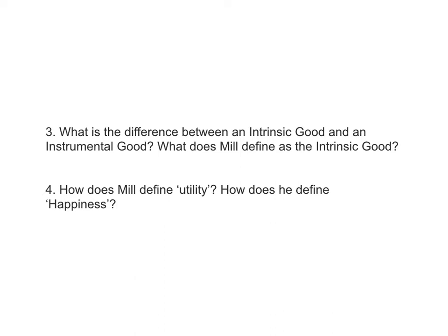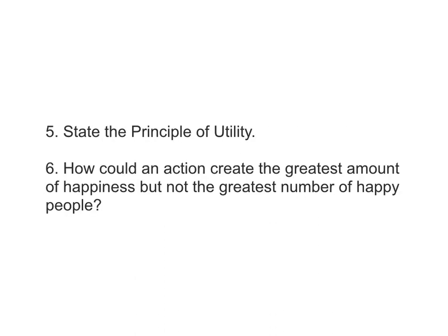We're going to look at the distinction between an intrinsic good and an instrumental good, and also the specific characterization of intrinsic good that Mill uses throughout his theory. At the most basic level, an intrinsic good is something that is good for its own sake. Then we'll state the principle of utility — there are actually a few different versions of it, moving from simpler to more complex formulations.